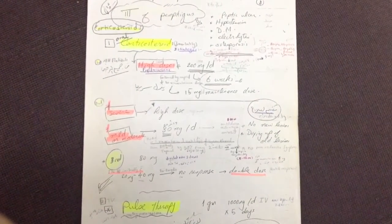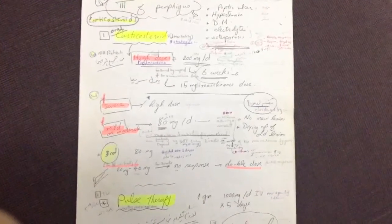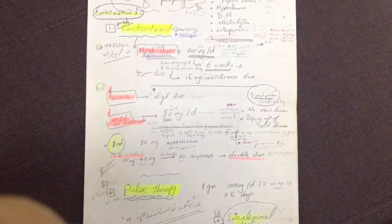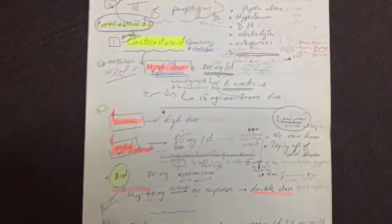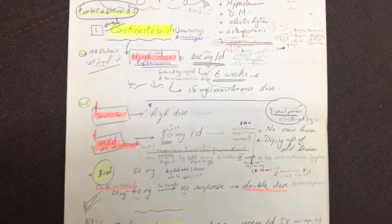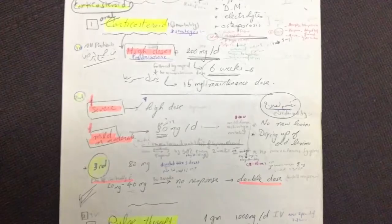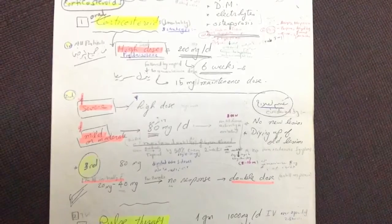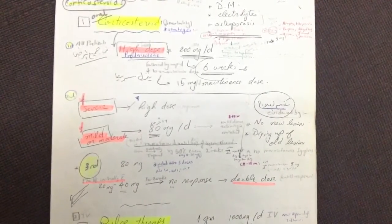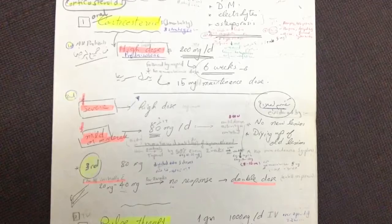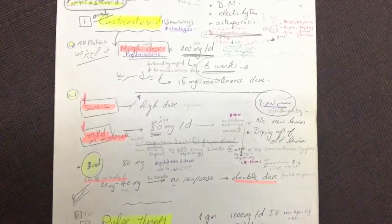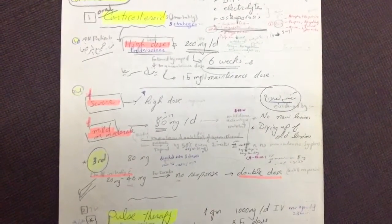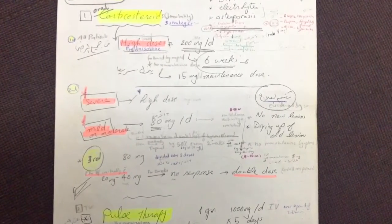Treatment of pemphigus is mainly with corticosteroids: systemic corticosteroids, pulse therapy, and intralesional therapy. For systemic corticosteroids, there are three regimens. The first is the high-dose regimen: 200 mg per day for six to eight weeks, followed by rapid decrease to a maintenance dose of 15 mg per day.